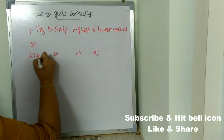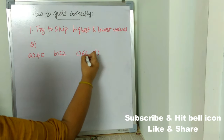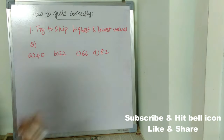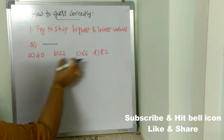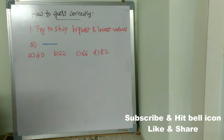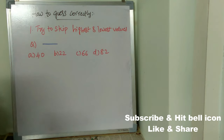The first option is 40, second is 22, third is 66, and fourth is 82. So there is one question and four options are given. Option A is 40, option B is 22, option C is 66, option D is 82. If you don't know the answer after solving, here is the technique.